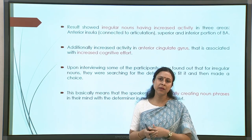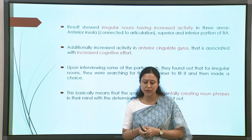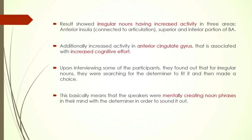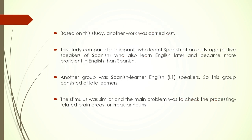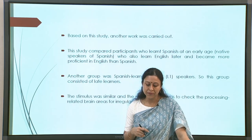Regular nouns posed no problem, but irregular nouns showed increased activity in three areas — connected to articulation in the superior and inferior parts of Broca's area — and added activity in other areas connected to increased cognitive effort. This increased cognitive effort was because subjects reported mentally connecting the words with the determiner to see what fits, taking extra effort. Based on this study, if processing is more effortful, a different brain area gets activated.